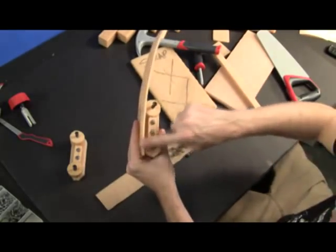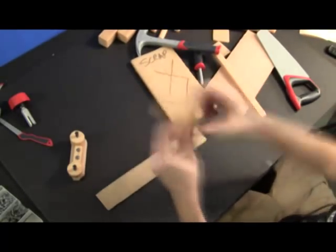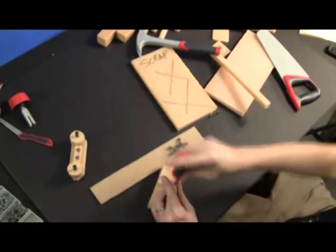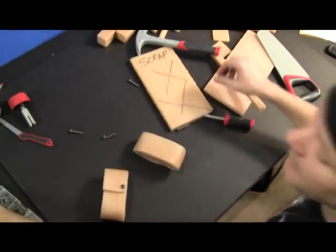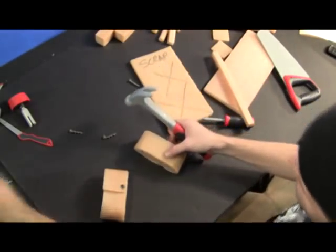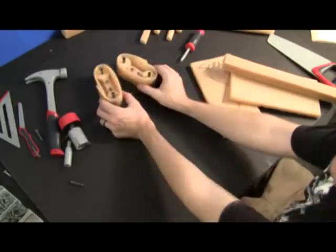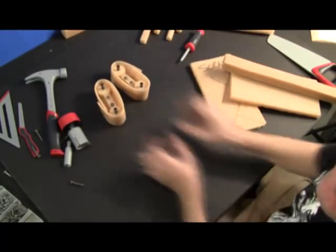Now, screw these on, putting the round side out. Add a nail from the top. Now that we're done with the treads, let's move on to the body.